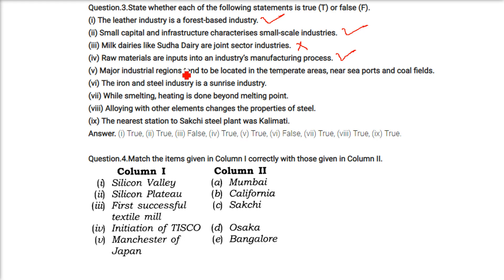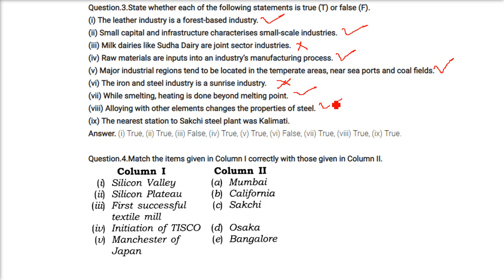Major industrial regions tend to be located in temperate areas near seaports and coal fields — absolutely true. The iron and steel industry is a sunrise industry — no, information technology, knowledge, and hospitality are sunrise industries. Smelting involves heating beyond the melting point — true. Alloying steel with other elements changes its properties, makes it harder and more usable — true.